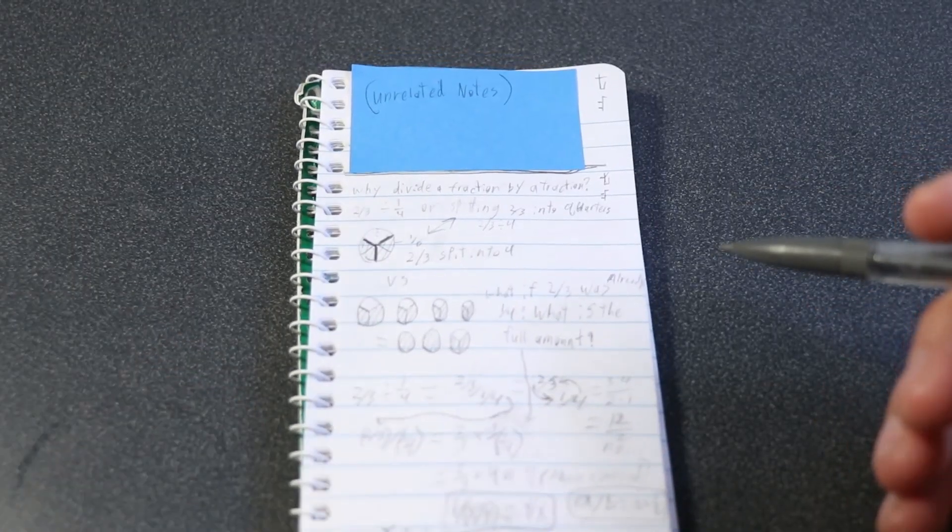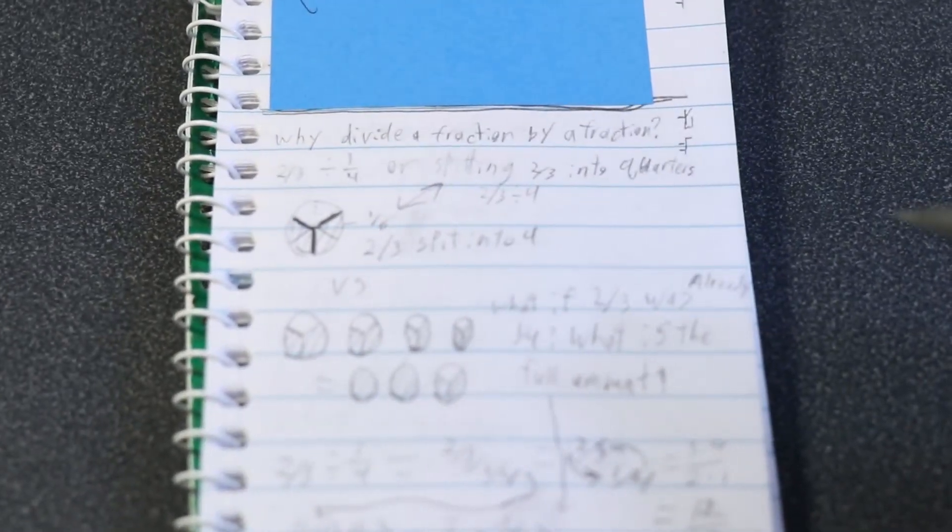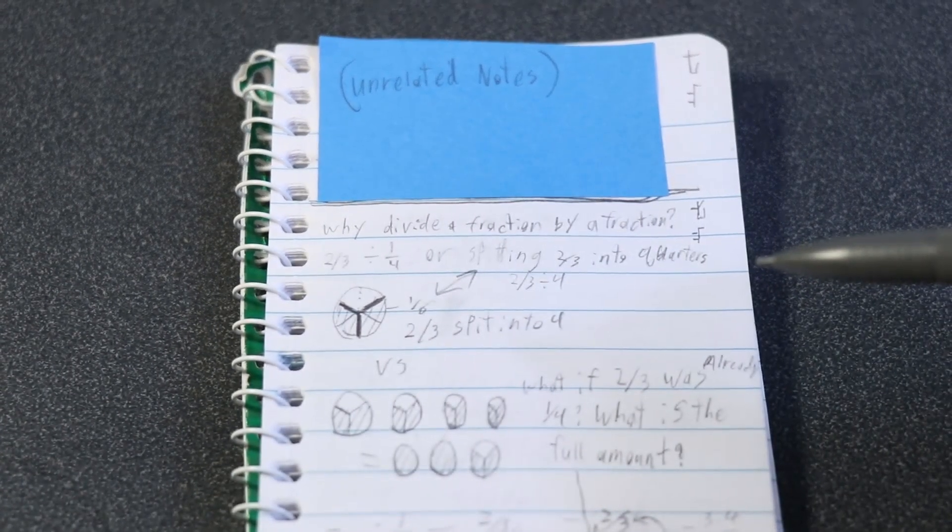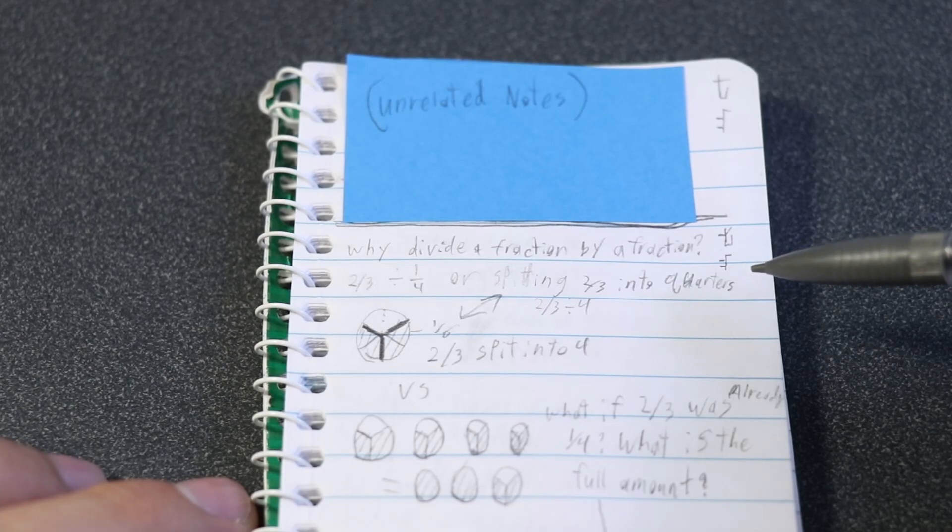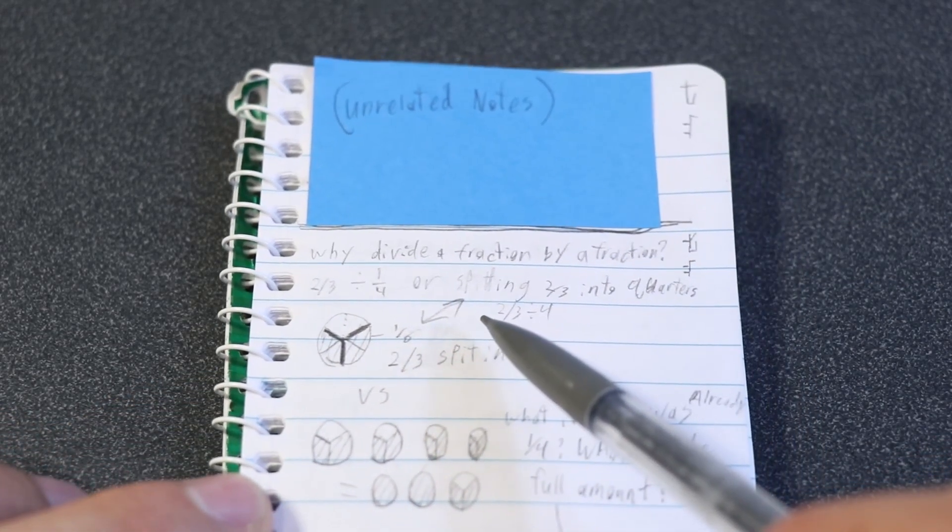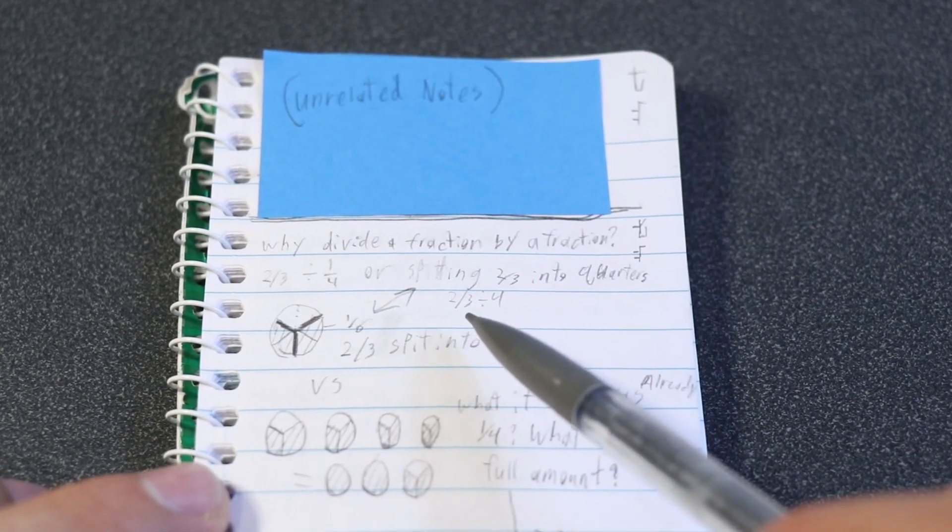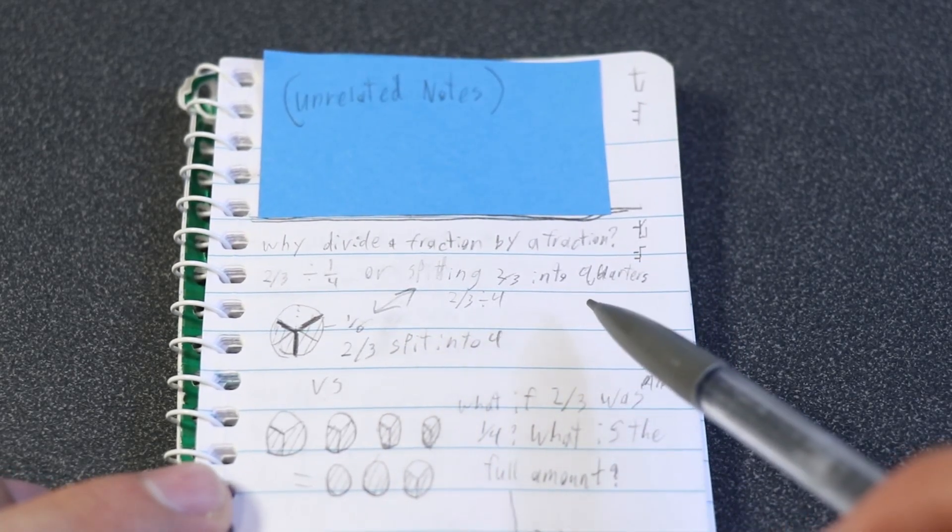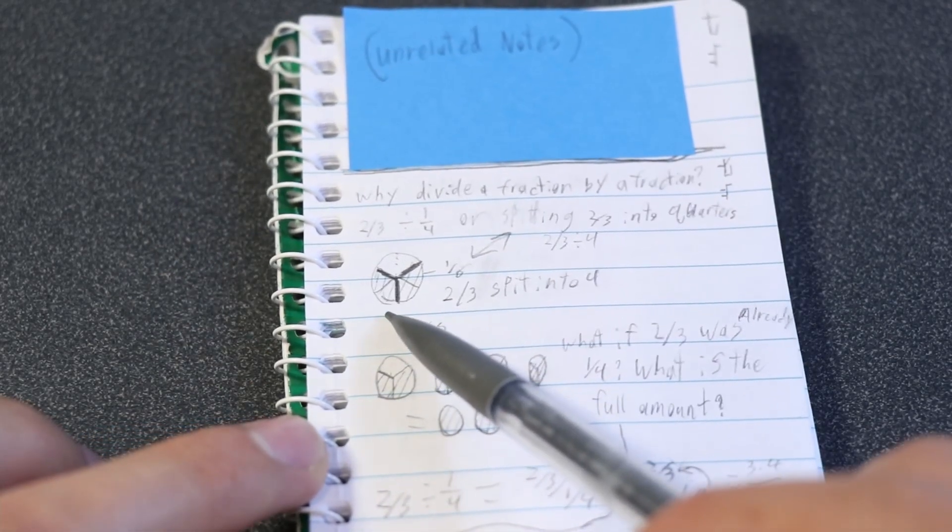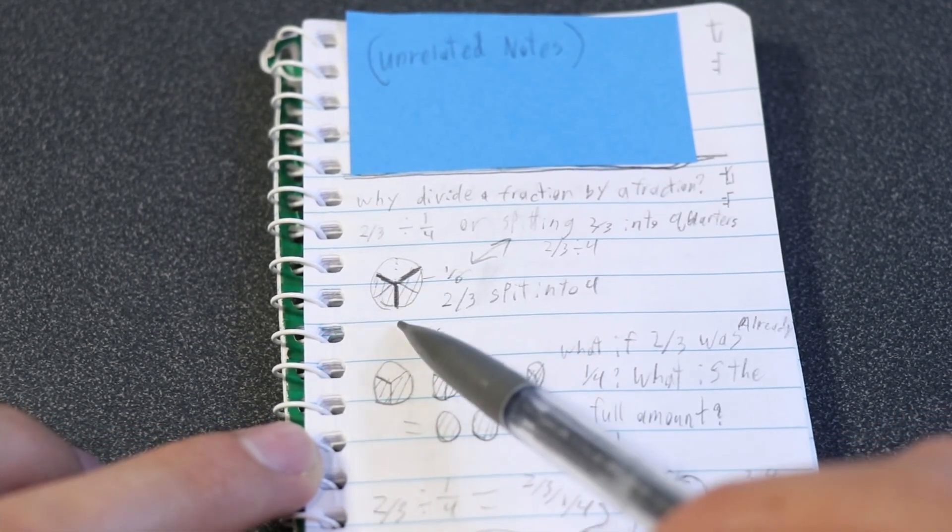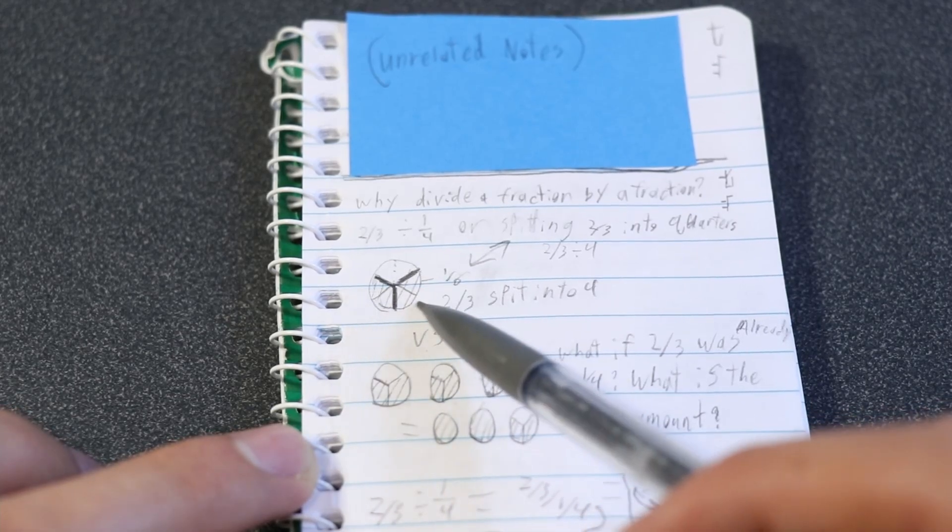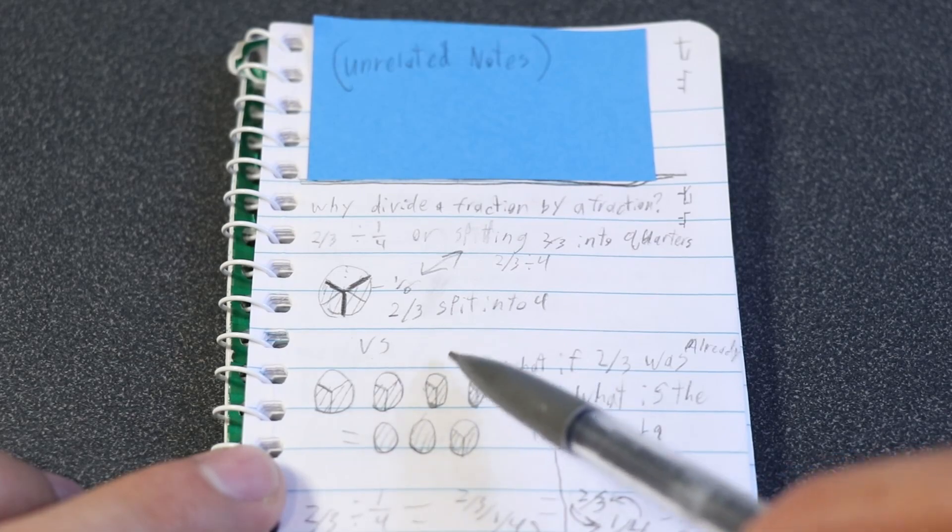This is the first notebook where I was trying to figure out the problem. So it always helps to start out with just saying what the problem is. Why divide a fraction by a fraction? That was the question the character asked, two-thirds divided by one-quarter, or what the character was doing was splitting two-thirds into quarters, or two-thirds divided by four. So this is what the character was doing, taking two-thirds and dividing the two-thirds here into four pieces. One-sixth is the answer.